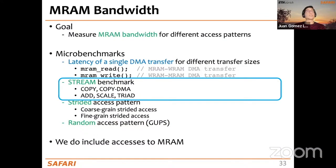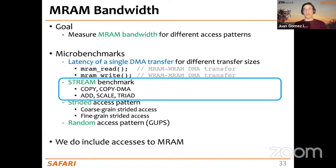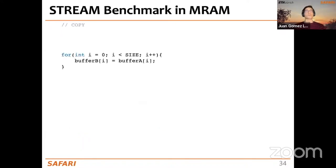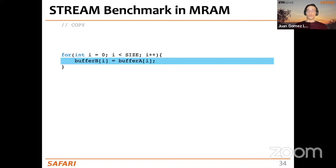Next we measure the MRAM bandwidth directly using the STREAM benchmark, now including MRAM accesses. This is the MRAM-inclusive copy STREAM benchmark: we perform an MRAM read that brings data into buffer A, then after processing in WRAM, we write from buffer B back to the corresponding MRAM address.